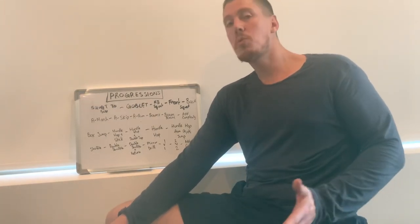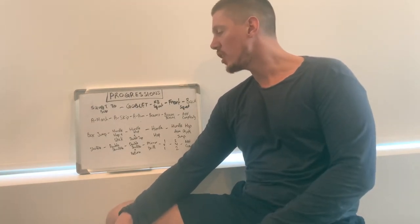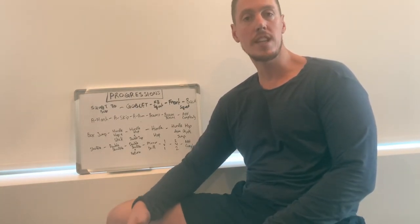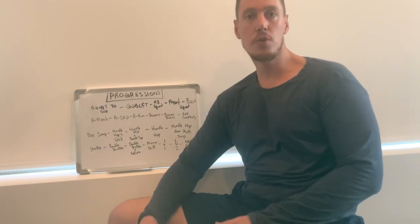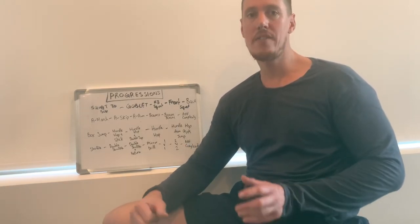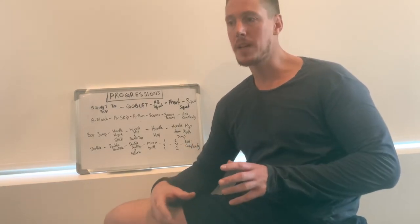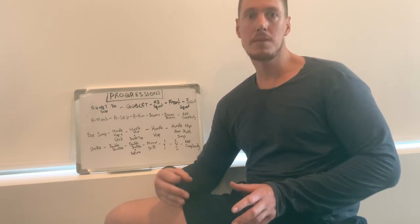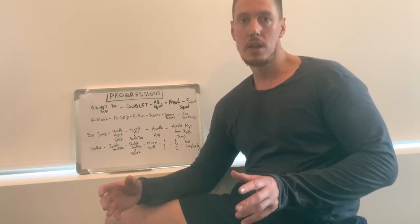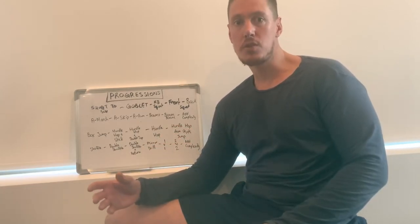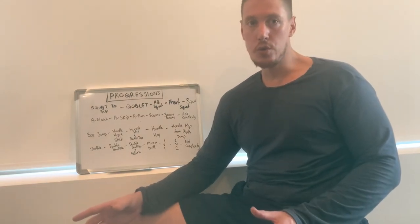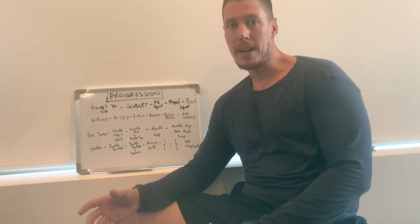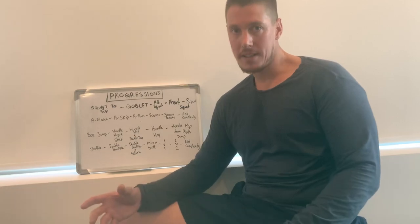The last one we'll go through is a basic agility example. You've got a shuffle pattern — you may have a shuffle into a double shuffle, to a double shuffle and return. We may then make it more complex and open with a mirror drill. And we can make this more open and complex with a one versus one, two versus two. We may add a football or a ball to make it more complex.